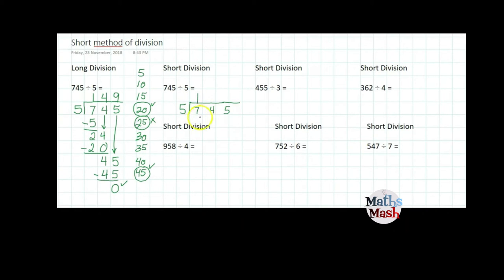So 7 subtract 5 leaves me with 2 that gives me 24. And now you can see that the closest I can come is 20 and I did that by multiplying 4 times 5 and there's 4 left over. Now I have 45. I got that by multiplying by 9 and so 45 subtract 45 is 0. So my answer is 149 with no remainders.